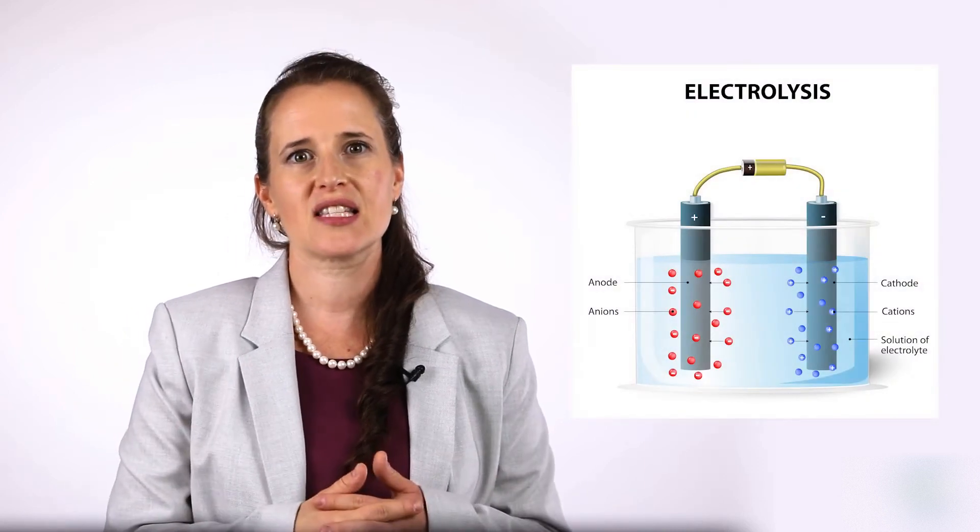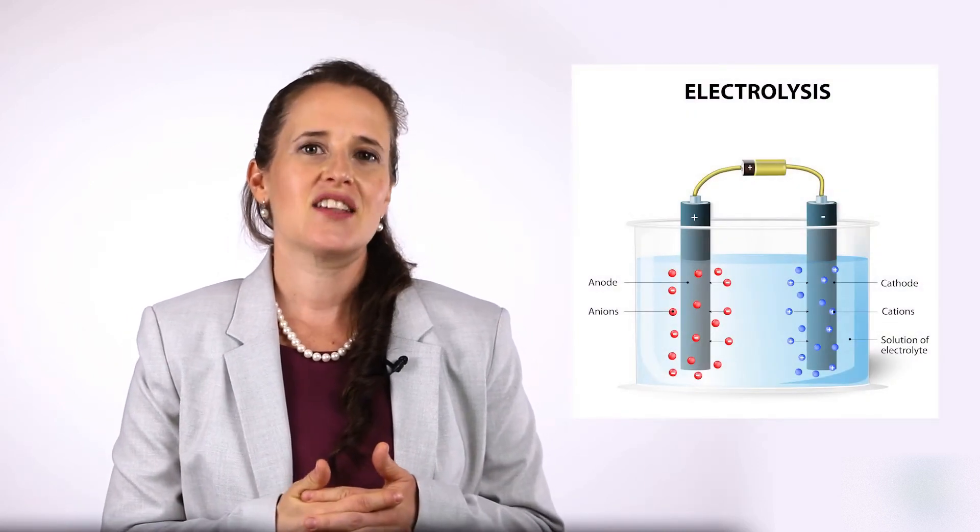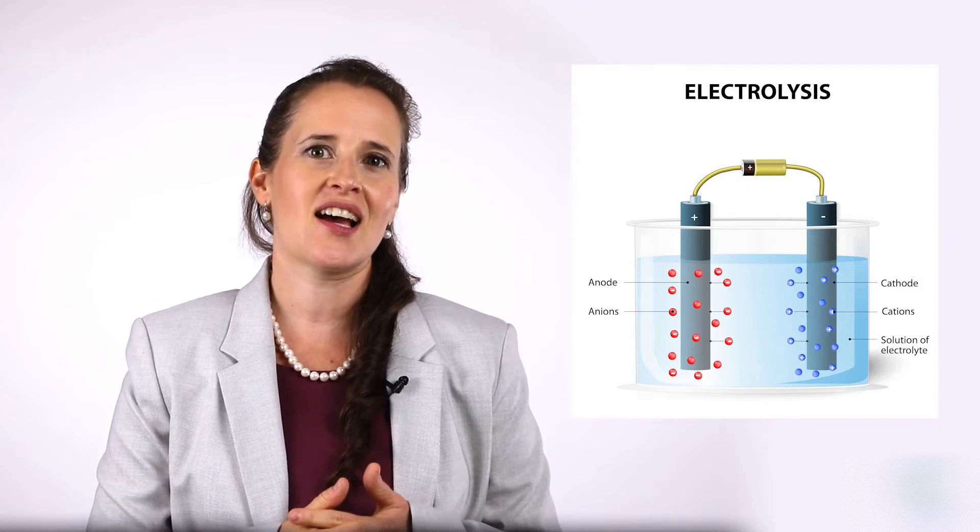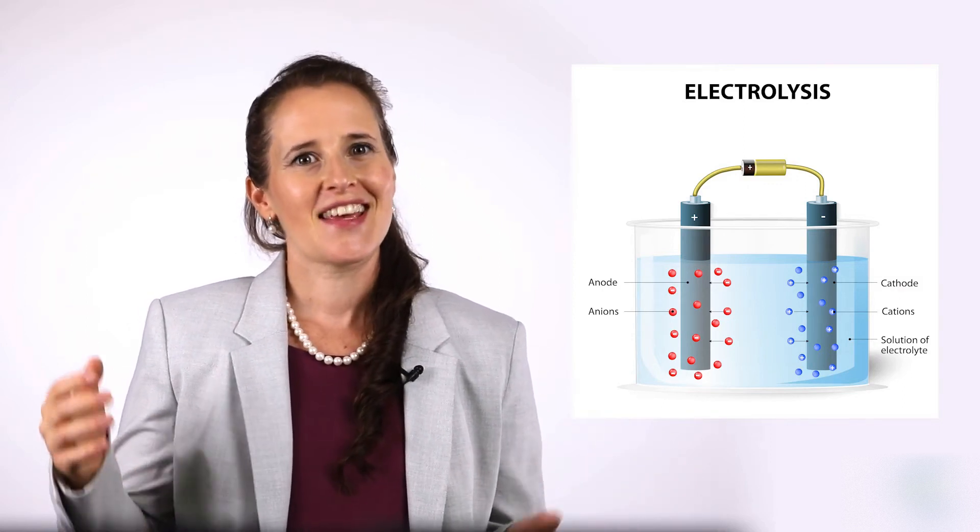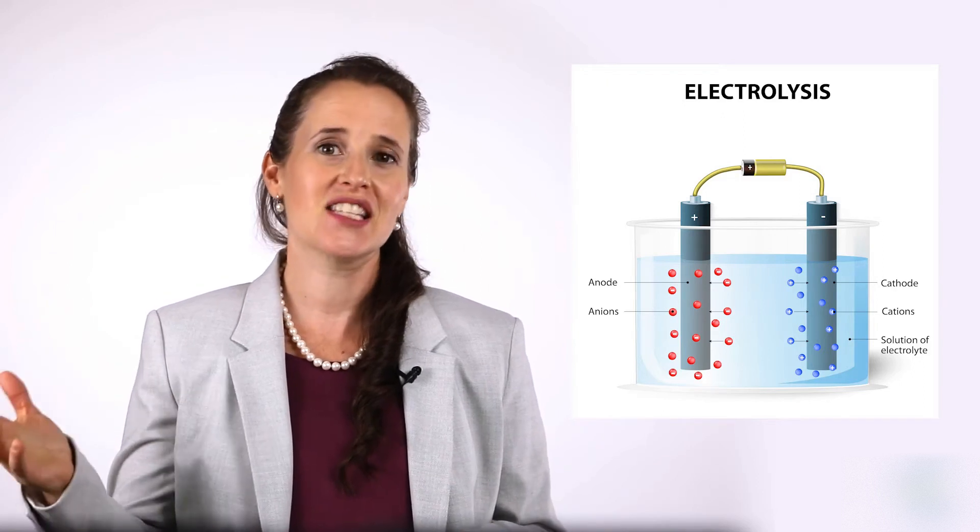Traditional electrolysis devices convert water into hydrogen gas and the hydroxide ions at the negative side or cathode, and oxygen gas and hydrogen ions at the positive side or anode.